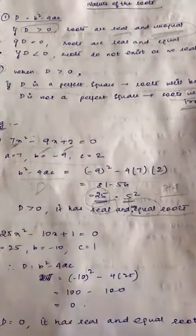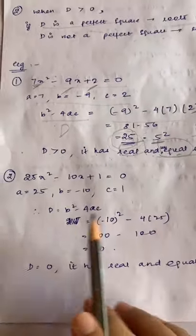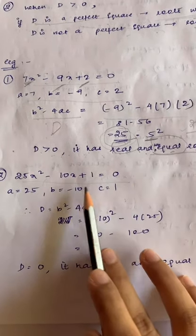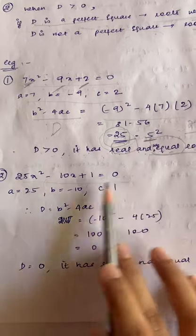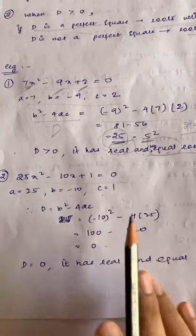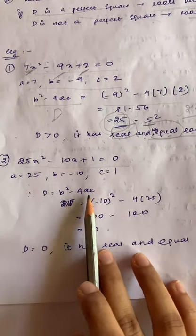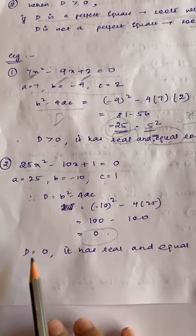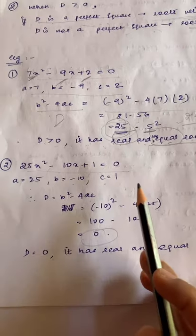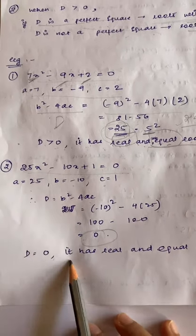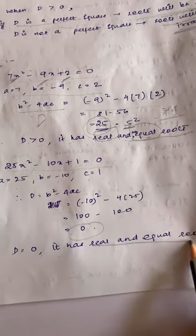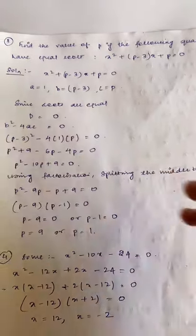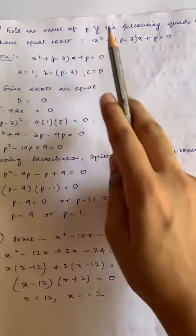The second example: 25x² - 10x + 1 = 0. Substituting into b² - 4ac gives D = 0. As per the rule, when D = 0, the equation has real and equal roots.